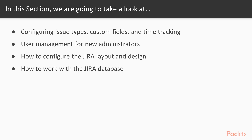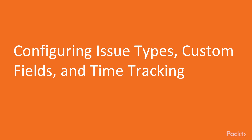In this section, we will be talking about adding new issue types and configuring them to your project. We will also look at creating and adding custom fields to desired issue types. Then we will explore enabling time tracking fields to track efforts that the project inputs towards an issue, which helps in estimating efforts. Then we are going to talk about user management for new administrators and learn to manage different user roles and permissions. After this, we will look at configuring the look and feel of Jira as well as modifying alerts and notifications. At the end, we will explore the Jira database with an example. Let's begin with the very first video: Configuring Issue Types, Custom Fields, and Time Tracking.